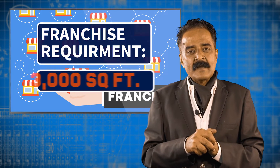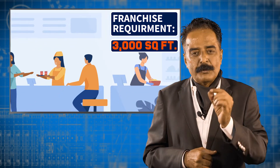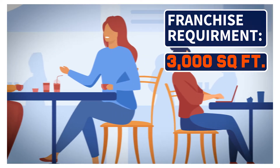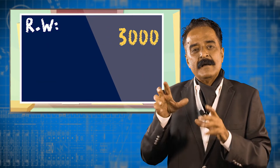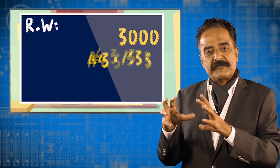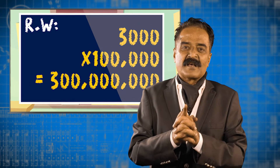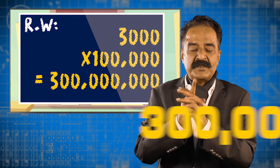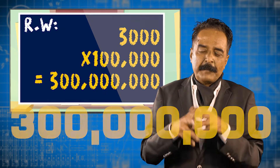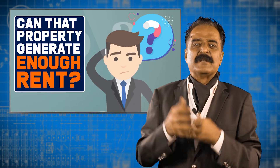If one good franchise — whether it is a government or food franchise — needs a minimum of 3,000 square feet, then 3,000 square feet multiplied by one lakh rupees per square foot comes to 3 crore rupees. Now, what can a franchise realistically do with that kind of investment cost?